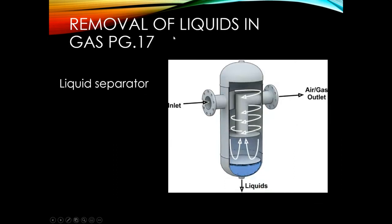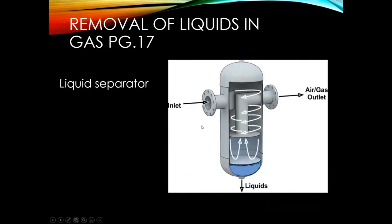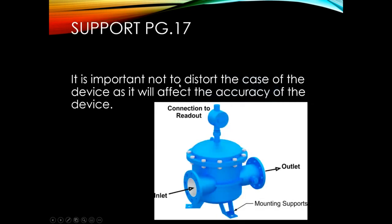For removing liquids in gas: the gas is fed in the top, liquids flow out the bottom, and gas flows out the top. The design of the equipment is basically the same regardless — it's just a matter of what you're taking out. Regarding support: you want to make sure the devices are supported properly and you're not using the piping system to support them, as some devices have mounting supports specifically for this purpose.